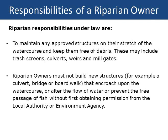Riparian owners must not build new structures — for example a culvert, bridge or boardwalk — that encroach upon the watercourse, or alter the flow of water or prevent the free passage of fish, without first obtaining permission from the local authority or Environment Agency.